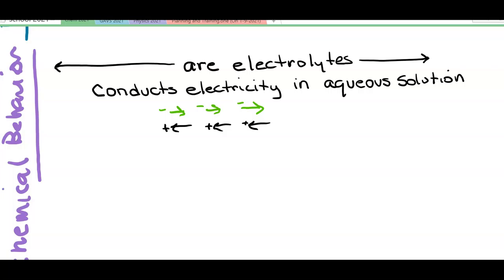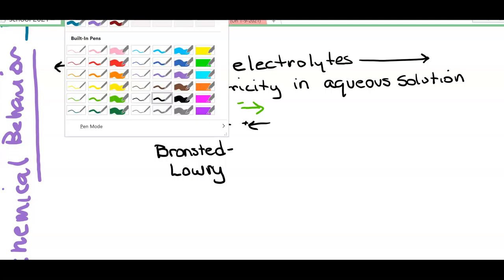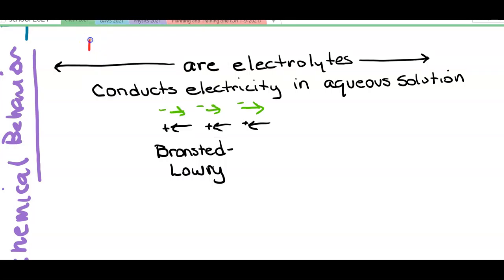And one of the best definitions for this comes from these two guys. They didn't work together, but they both worked on the same concept and got their names on a definition for acids and bases in the Bronsted-Lowry definition. And remember that we're talking about acids over here and bases right here.